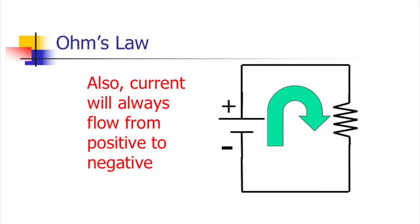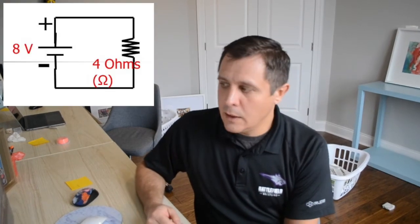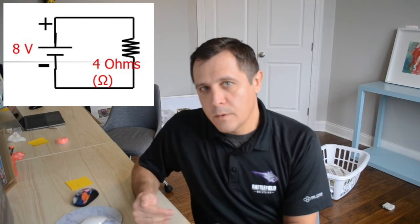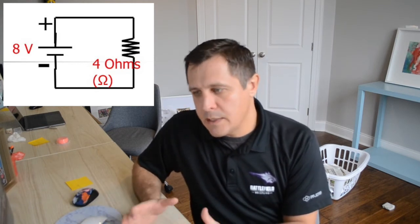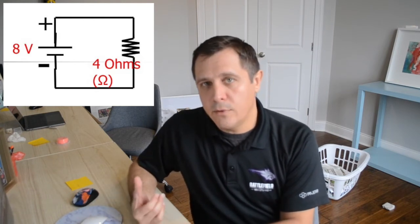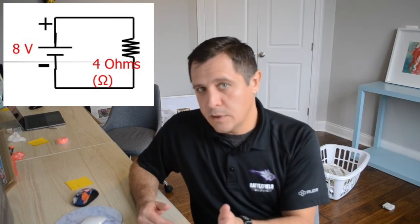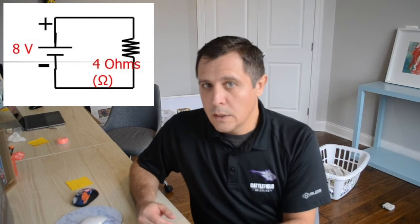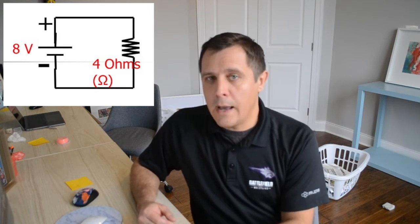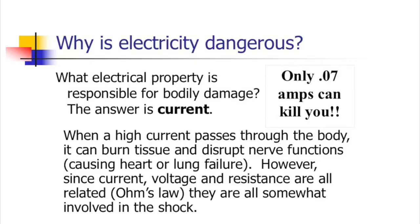Current always goes from positive to negative. For a practice example: if I have an 8-volt battery and a 4-ohm resistor in a simple circuit, using V equals IR, you divide voltage V by resistance R to get current I — that gives you 2 amps.